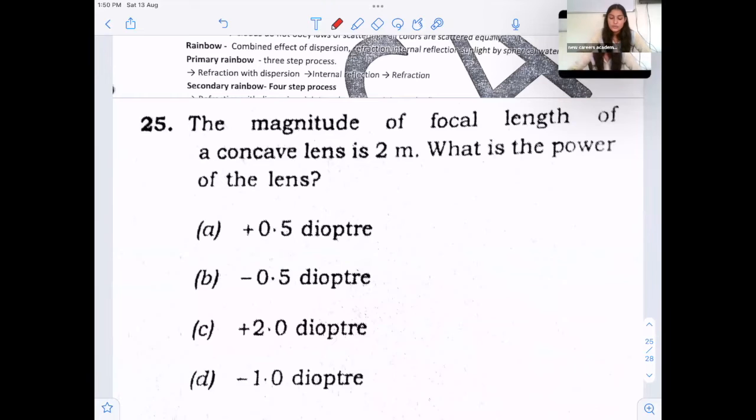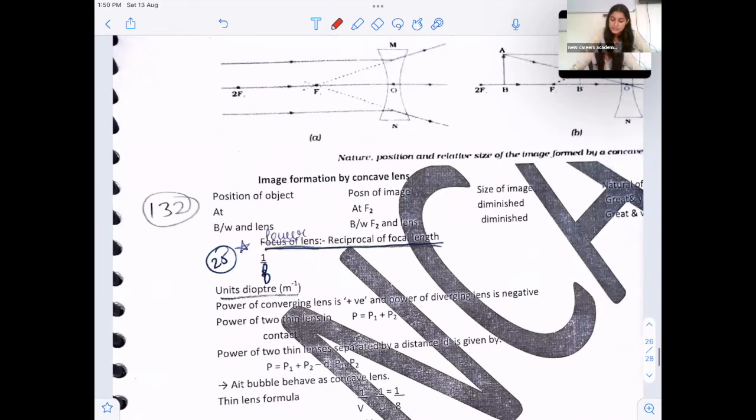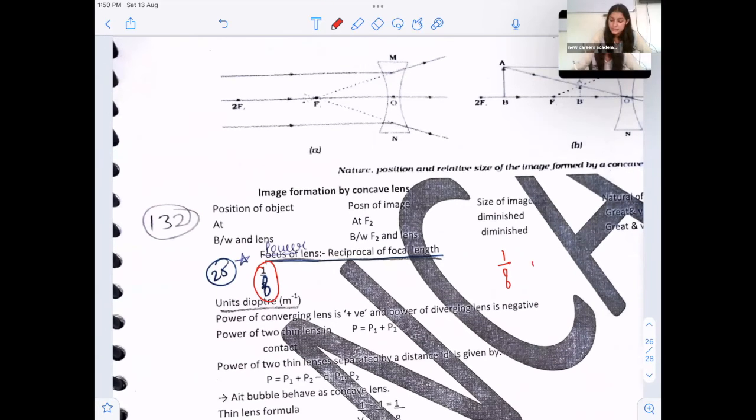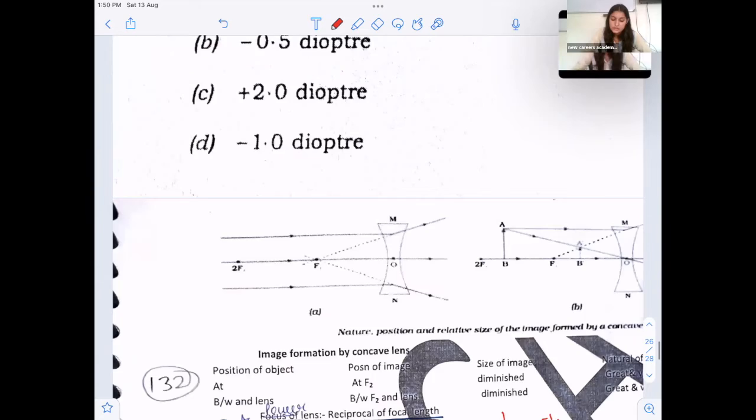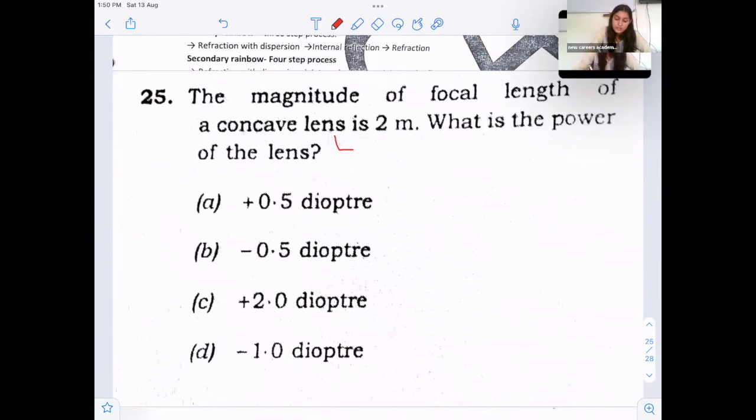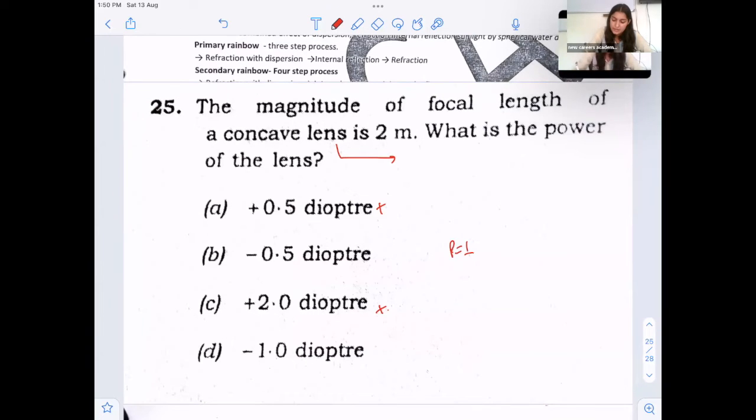Next question. The magnitude of focal length of concave lens is 2 meter, what is the power of the lens? The formula for power of lens is 1 by focal length, where it is given 1 by focal length, and remember, it's in meter inverse. So, since they talk about concave lens, concave lens has a power in negative. So, we can eliminate these two options, which have power in positive. Power is 1 by f, 1 by focal length, 1 by 2 is minus 0.5 diopter is correct answer.